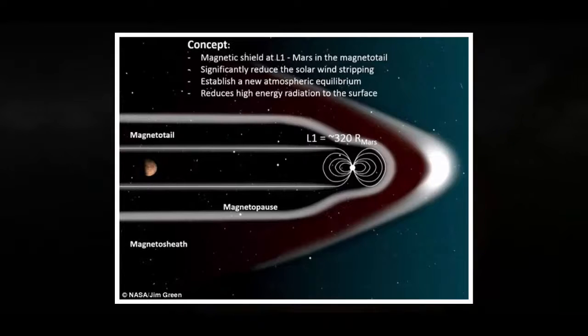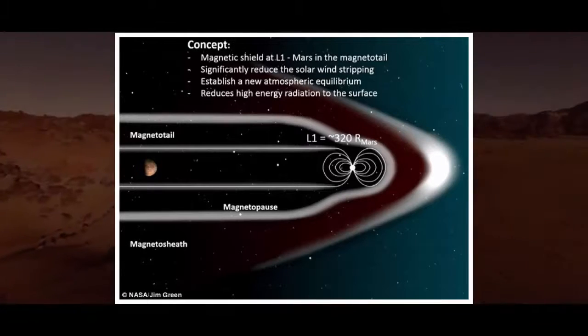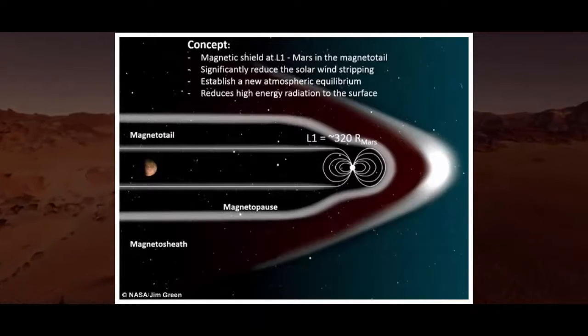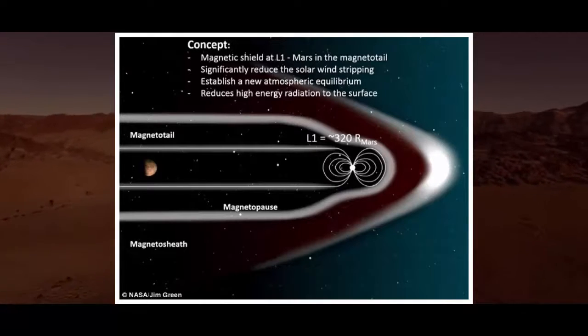Data from missions like NASA's MAVEN and the ESA's Mars Express supports the idea that Mars was once more Earth-like. A few billion years ago, Mars had a magnetic field that shielded it from radiation and the solar wind.